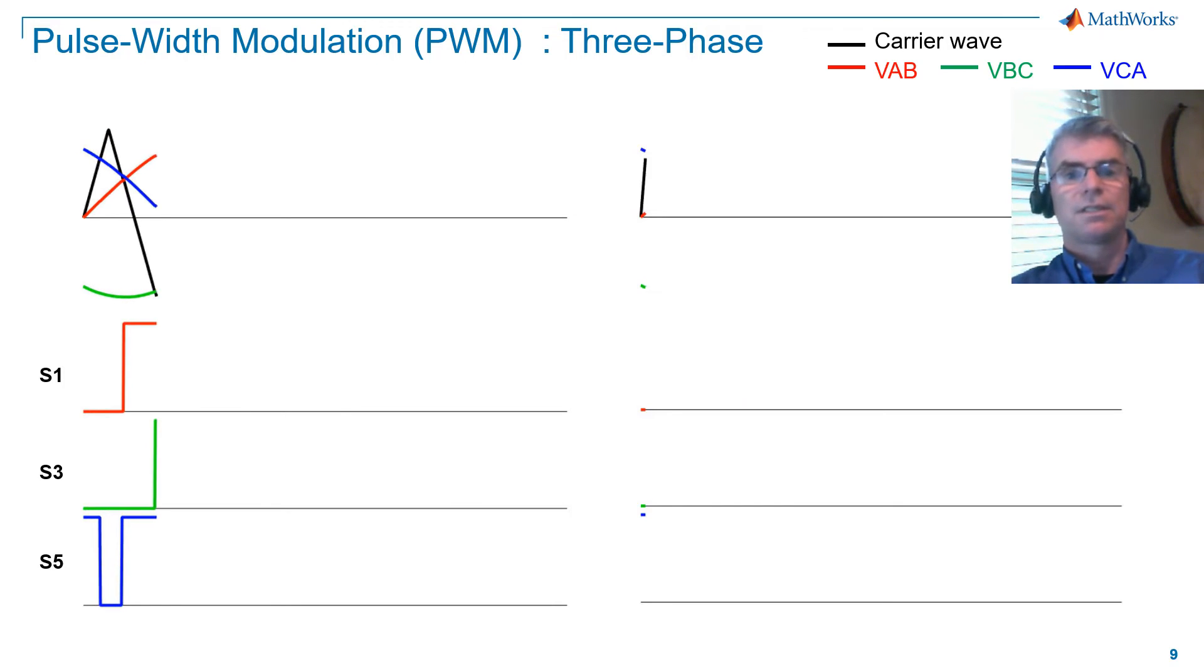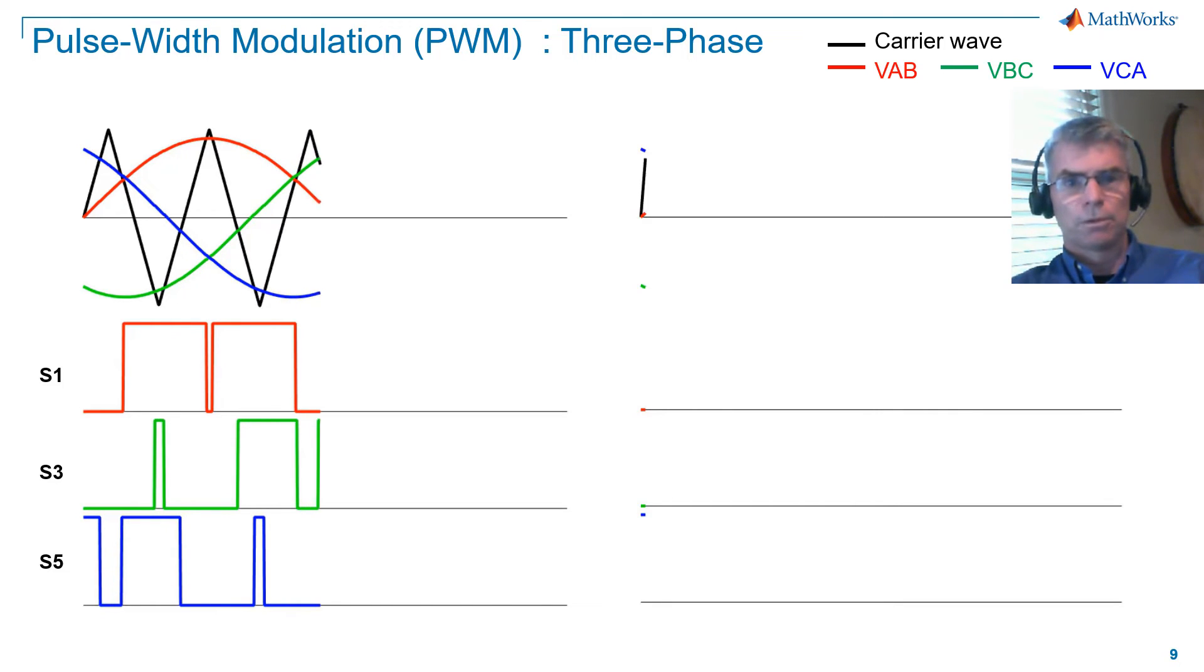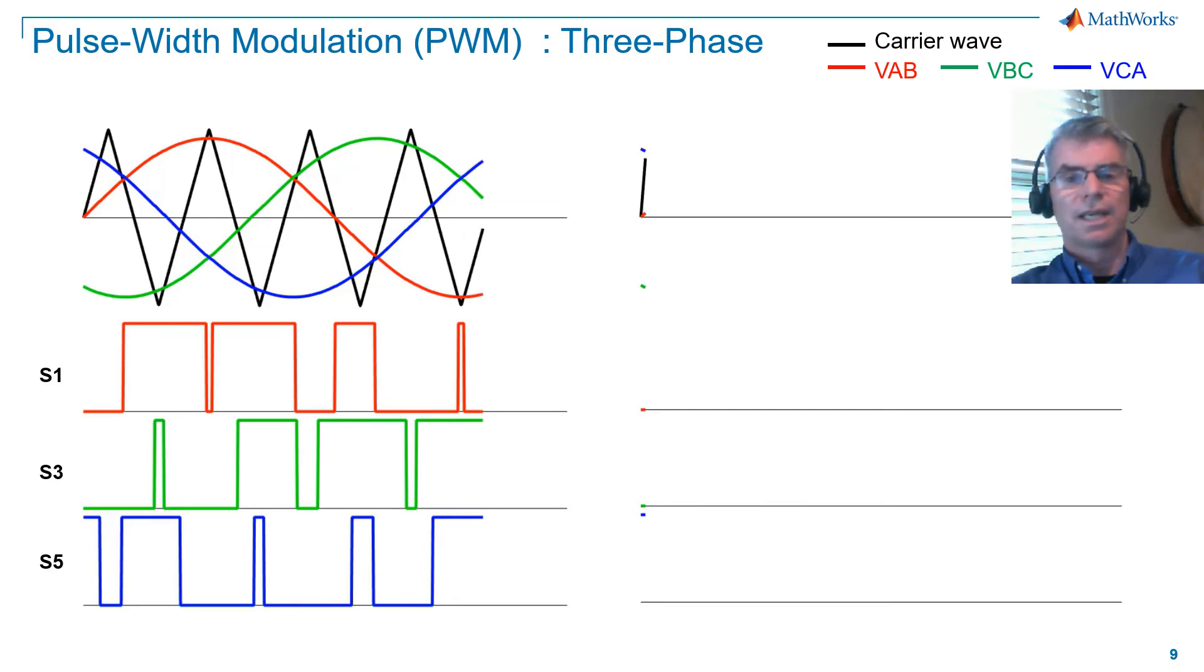With a three-phase system, we compare the three waveforms we want to encode with the single carrier wave. As we saw before with our single-phase example, when the modulation wave is greater than the carrier wave, the binary signal is on. And when the modulation wave is lower than the carrier wave, the binary signal is off.